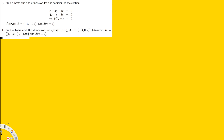This problem is asking us to find the basis and the dimension of the solution space for the given system. We have a homogeneous system, so we need to find its solution. First, we arrange it in matrix form: 1 3 4 / 2 1 3 / -1 2 1, with the right-hand side being 0 0 0.